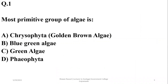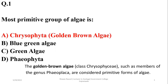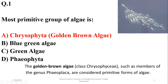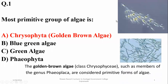Question one is about the most primitive group of algae. You might think it's golden-brown algae, but actually blue-green algae are not true algae — they are cyanobacteria, a prokaryotic organism. So the right answer is the golden-brown algae class Chrysophyceae, which is considered the oldest or most primitive algae.